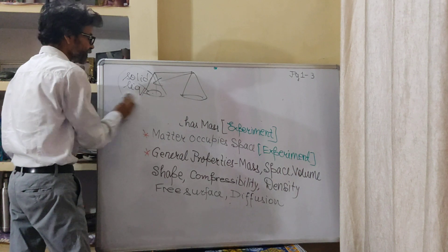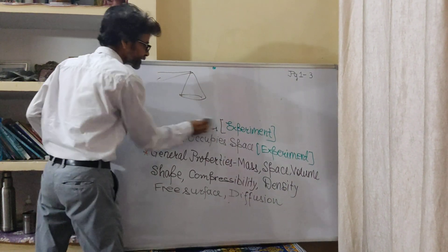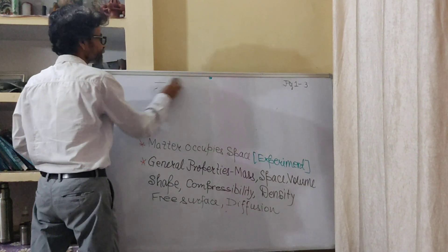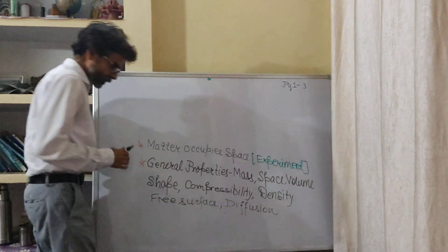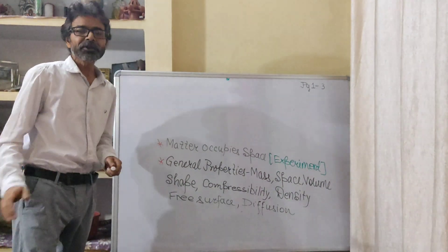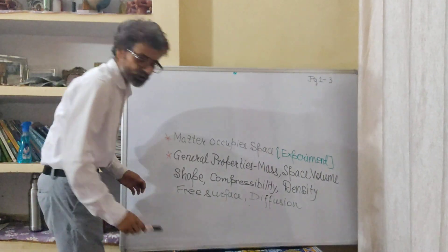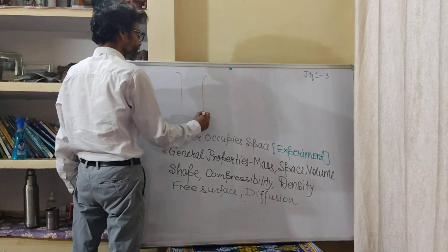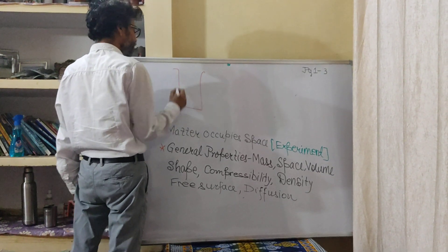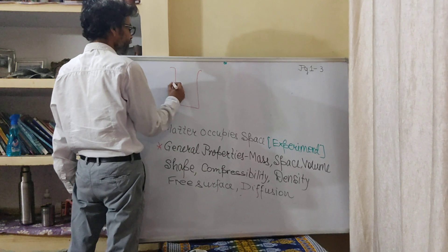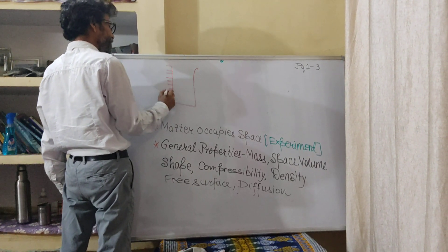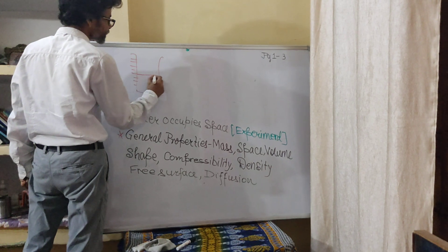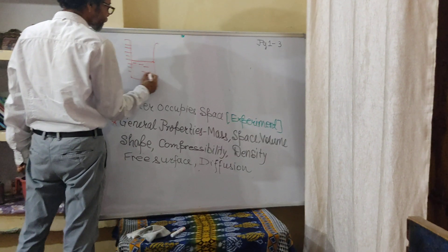The next part of the study is that matter occupies space. Matter in all three states — solid, liquid and gas — occupies space. The first experiment in our book is with the help of a measuring cylinder. It is a cylindrical shape vessel in which markings are made for taking measurements: 5 ml, 10 ml, 20 ml, 30 ml, like that. When we take the liquid, it occupies the space. The first part, that liquid occupies the space, is already proved.